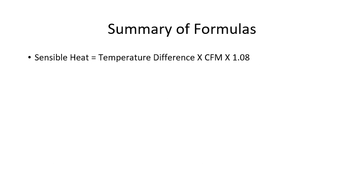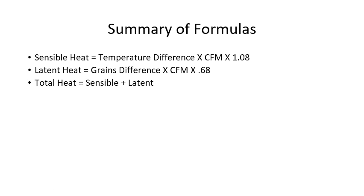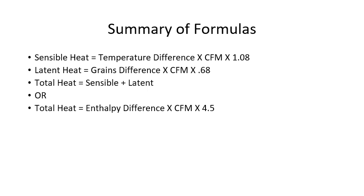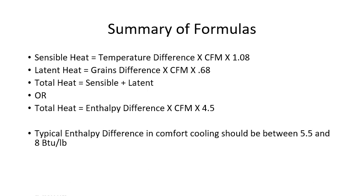Let's take a moment to summarize our formulas — this is a good time to write these down. Our sensible heat formula is temperature difference times CFM times 1.08. Latent heat is grains difference times CFM times 0.68. Total heat can be calculated by adding sensible plus latent, or by using the total heat formula: enthalpy difference times CFM times 4.5. Our typical enthalpy difference in comfort cooling is between 5.5 and 8.0 BTUs per pound. The sensible heat ratio is determined by dividing sensible by total heat, and a typical sensible heat ratio should be between 0.7 and 0.8.